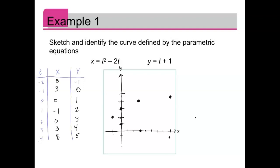We'll trace out the curve in the direction of the values of t. So we have t equals negative 2, negative 1, 0, 1, 2, 3, and 4. I'll just trace that out. There we go.